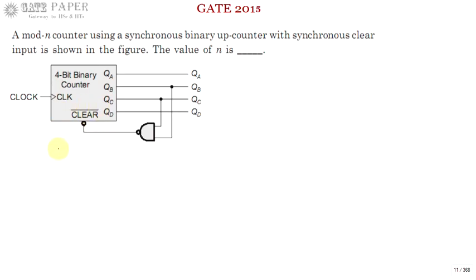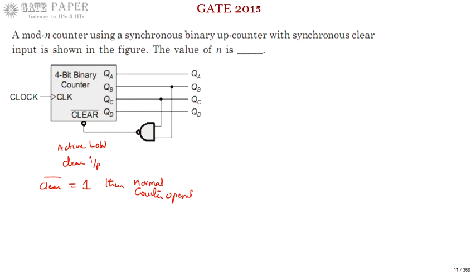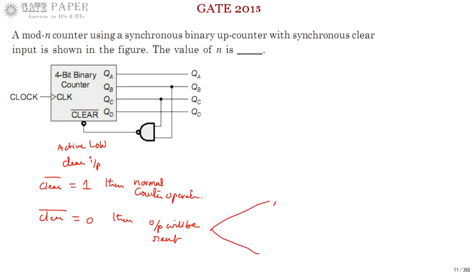Active low clear input means: whenever clear bar equals 1, normal counter operation takes place. When clear bar equals 0, the output is reset — that is the clear operation. Whether that reset is synchronous or asynchronous depends on when it responds relative to the clock.